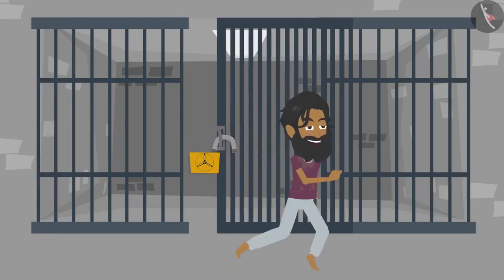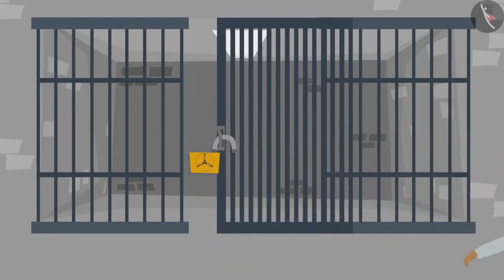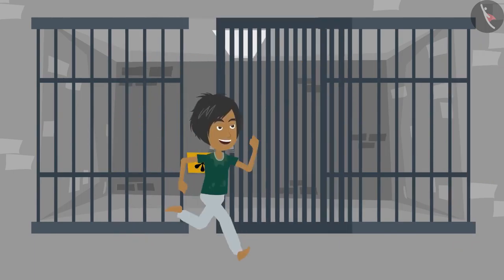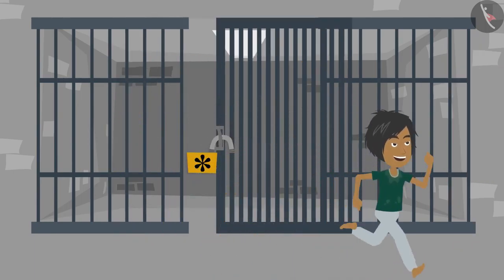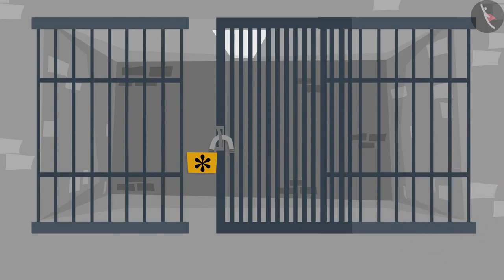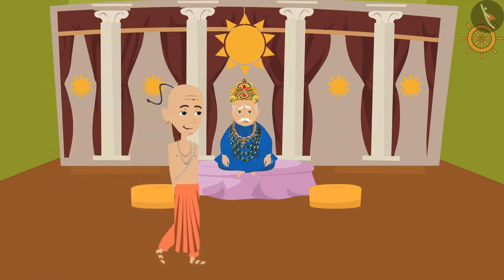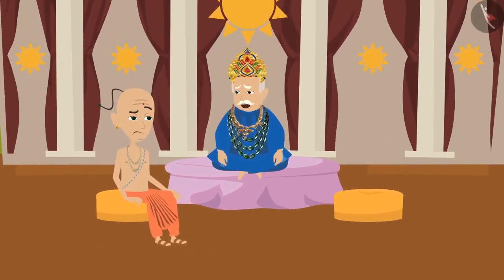The king tried to change the locks but still the incidents of escaping from the prison did not reduce. The king was worried and called for Tenali Rama, the noble scholar of his court.